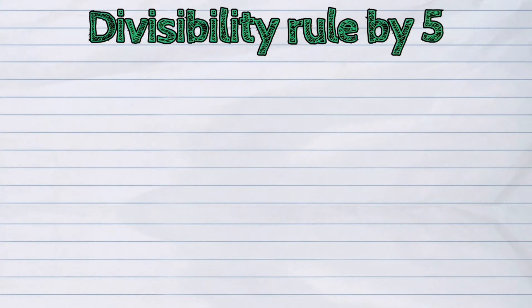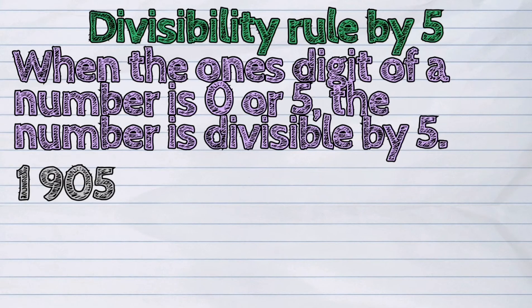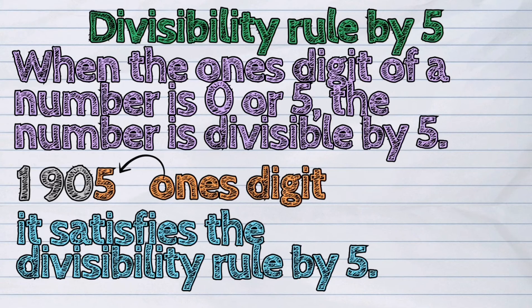Divisibility rule by five: when the one's digit of a number is zero or five, the number is divisible by five. For example, in 1905, the one's digit is five, so it satisfies the divisibility rule by five.